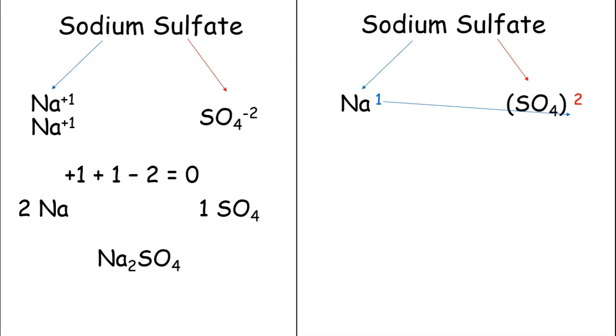Then you cross the one over, and then you cross the two over, and you're given Na2(SO4)1. Then what you do is because ones disappear, we can get rid of the parentheses and the one in this case. And we're given the same exact answer, Na2SO4.